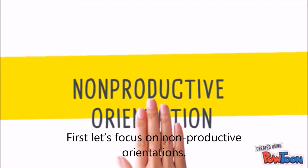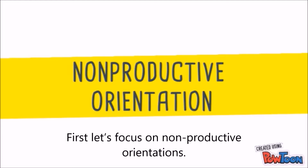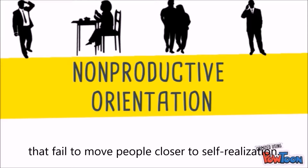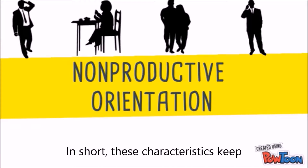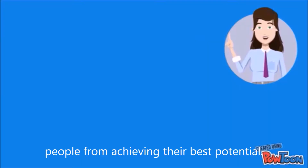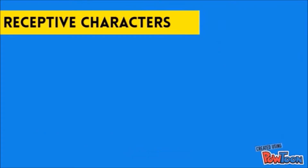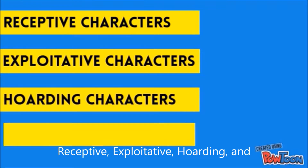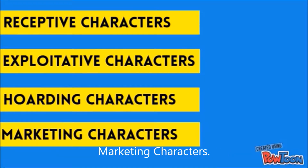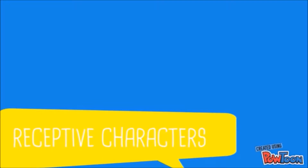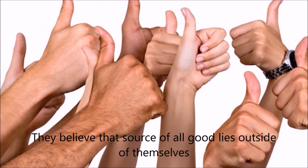First, let's focus on non-productive orientations. Non-productive orientations suggest strategies that fail to move people closer to self-realization. In short, these characteristics keep people from achieving their best potential. There are four types of non-productive character orientations: receptive, exploitative, hoarding, and marketing characters.